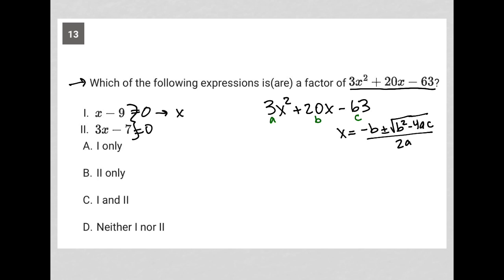So that means here we'd have x equals 9. So that's what you'd expect to get here if that was an option. And here we'd have x is equal to 7 thirds, right? So we'd add 7 to both sides and divide by 3.